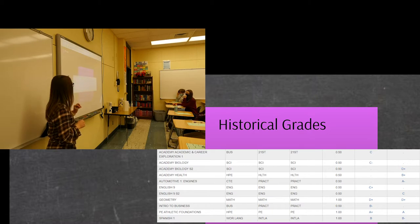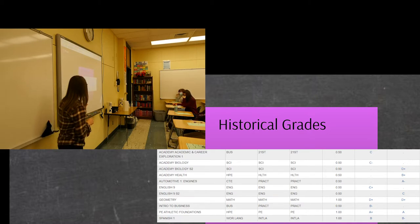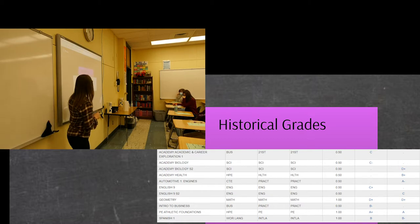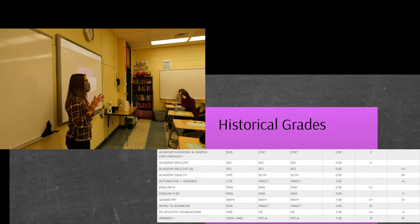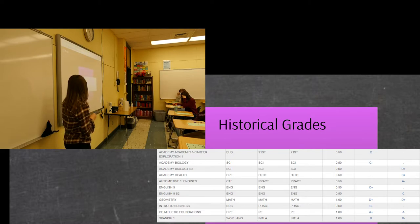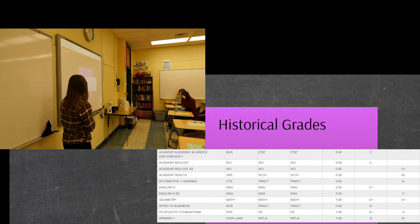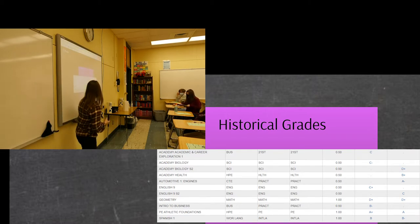Historical grades is just a snapshot showing all of the classes you've taken and what grade you received. Your current teacher might want to reference this to see what you'll go on to next year, and you can double-check to see if you've failed any classes. Hopefully you know by now, but if you don't, you can reference this page.